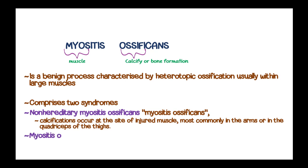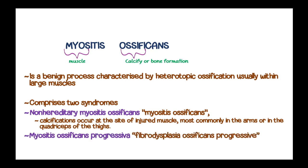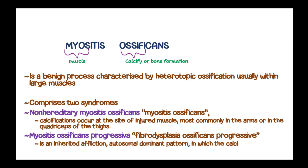The second syndrome is myositis ossificans progressiva, also known as fibrodysplasia ossificans progressiva. This is an inherited autosomal dominant condition in which ossification occurs without an injury and in a predictable pattern.